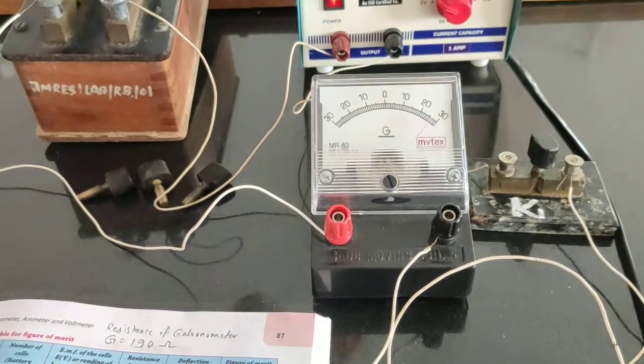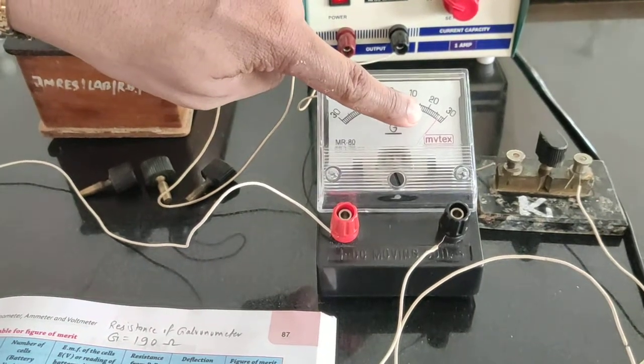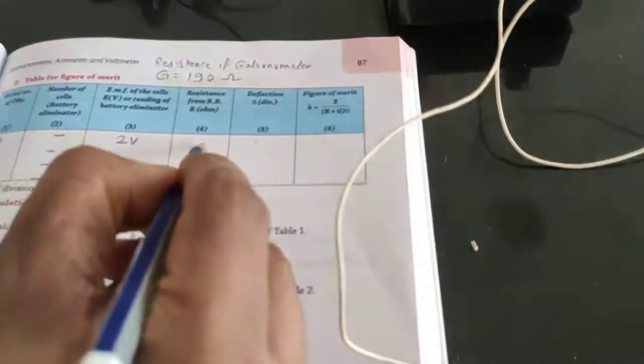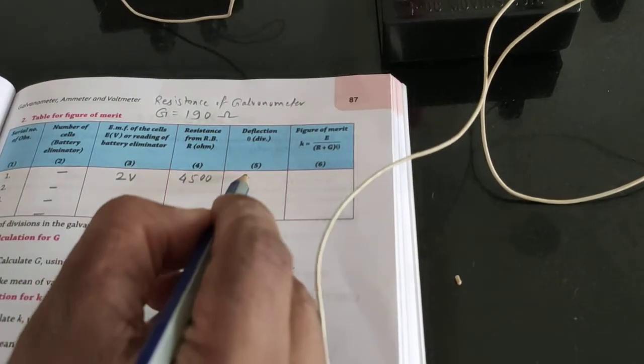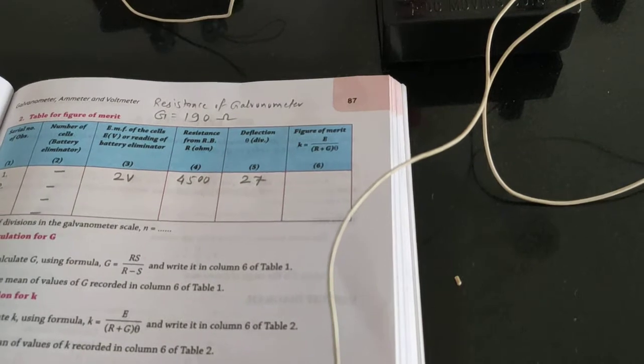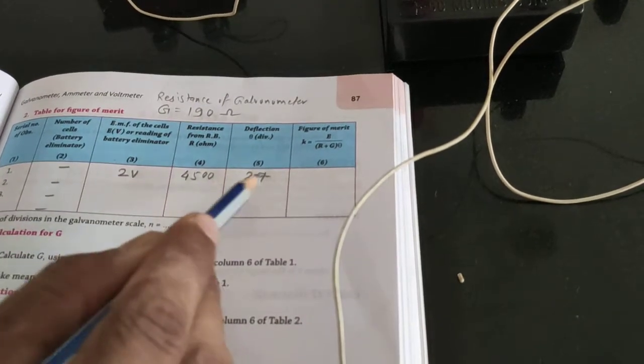If I switch on the battery, you can check out the galvanometer shows maximum reading - it is approximately 27. So I have kept 4500 ohm resistance and I am getting the reading 27. This is the way of taking the reading.